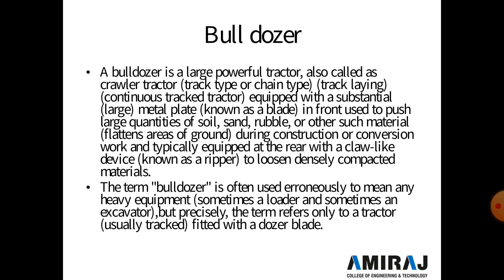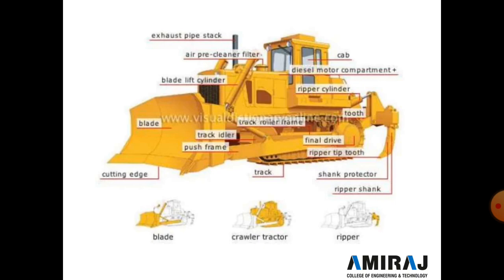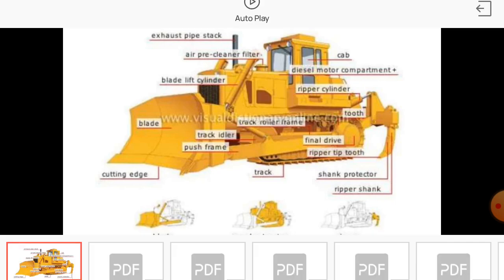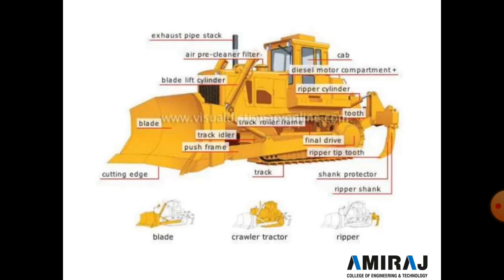The term bulldozer is often used to mean any heavy equipment — sometimes a loader or an excavator — but precisely the term refers only to tracked equipment fitted with a bulldozer blade. As seen in the photographs, the blade is provided in the front side. This blade cuts the soil or other material, and the cutting edge is on the front side. The bulldozer is a powerful machine compared to other machinery and is mounted on a crawler.